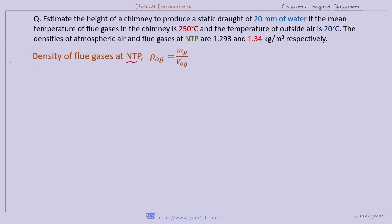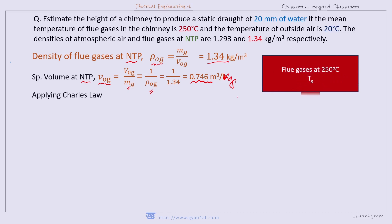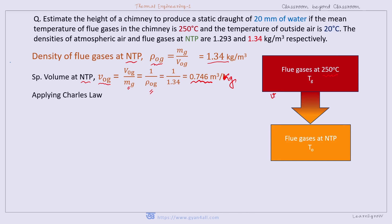The density of flue gas at NTP is ρ₀_G equals mass per unit volume, and this value is given as 1.34 kg/m³. The specific volume of flue gases at NTP is small v₀_G equals volume per unit mass of gas — in this case it is m_G — which is also the reciprocal of density. So the specific volume of gas at NTP equals 0.746 m³/kg. We can apply Charles's Law similarly for the flue gas, with its temperature at 250°C.